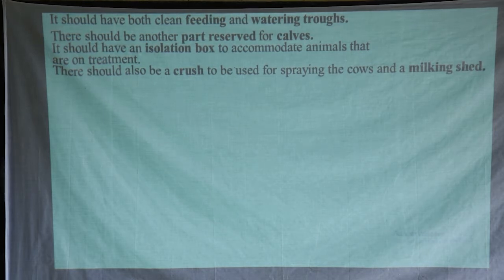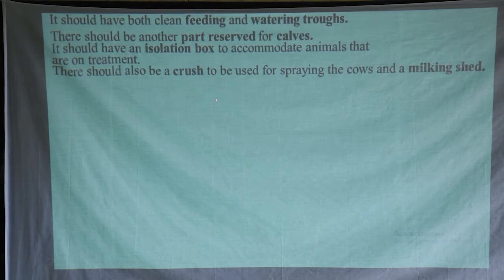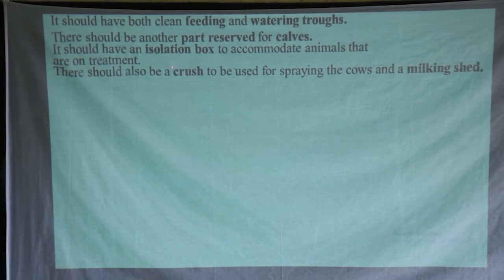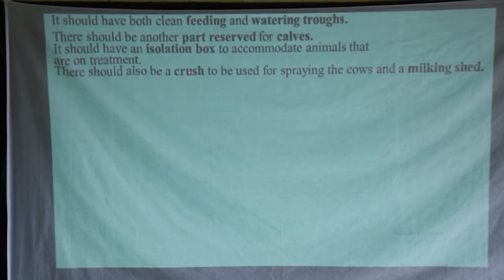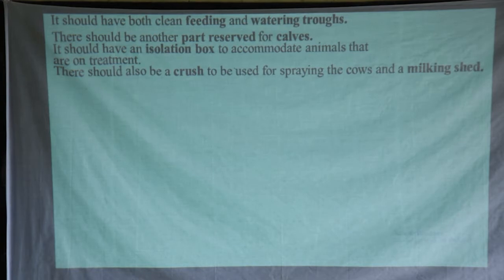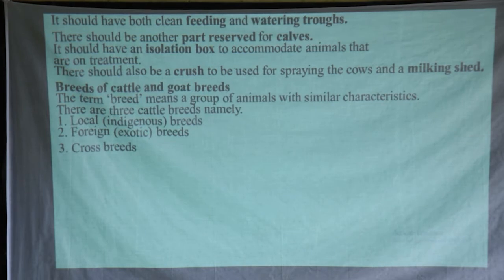There should also be a crush used for spraying the cows and a milking shed. A cattle crush is a place reserved for treating sick animals, mainly spraying. Some use cattle dips where animals can dip into insecticides or acaricides. For milking, this is called a milking shed — you can't just milk from the cow shed; there must be a separate part for milking to avoid contamination of your milk.